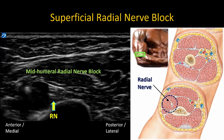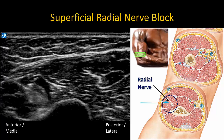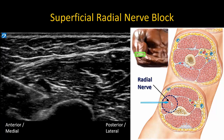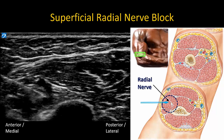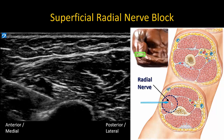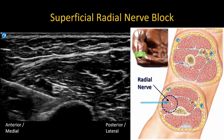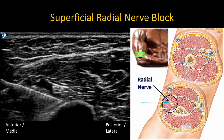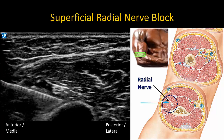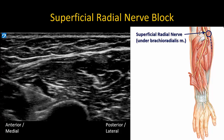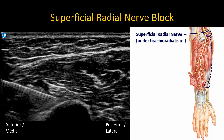As was discussed in part two of this video series, the radial nerve can be blocked at the mid-humeral area, as shown here. If motor sparing of the extensor forearm muscles is desired, however, the superficial radial nerve must be selectively blocked while avoiding blockade of the deep branch and posterior interosseous nerve.